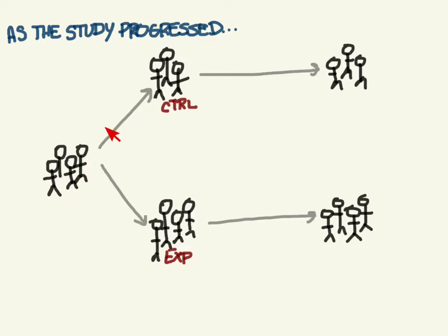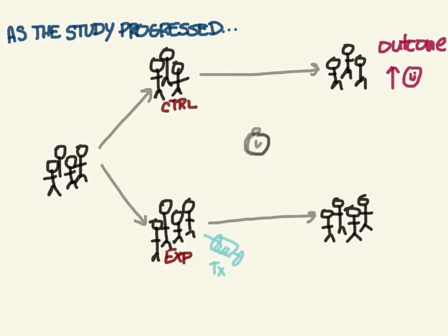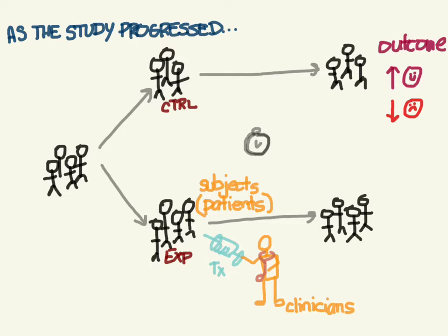The next thing is to see if bias was introduced as the study progressed. We have our sample split into control and experimental groups, hopefully through randomization. The control got the placebo and the experimental got the treatment, and we watch them over time, observing for some outcome — either an increase of something good or a decrease of something bad. In this process, many people can introduce their own biases: the physicians or clinicians administering the medicines, the patients receiving the treatments, and the people checking the outcomes.